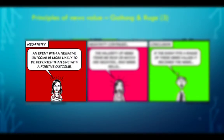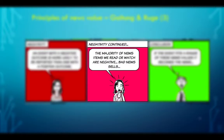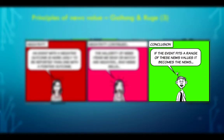Negativity: an event with a negative outcome is more likely to be reported than one with a positive outcome. This is one of the biggest criticisms of news, because most news items are negative. Bad news sells — people want to know what things are bad and what is coming in their direction. So what is the conclusion? If the event fits a range of these news values, it becomes the news.